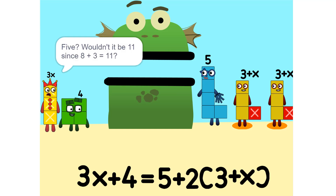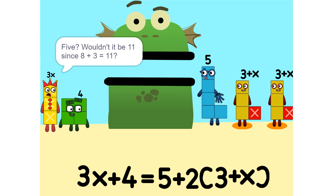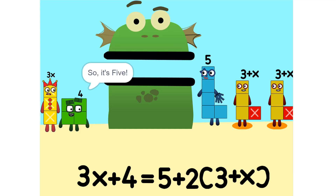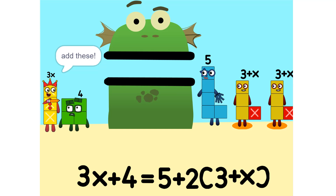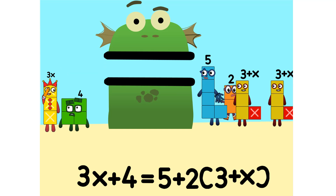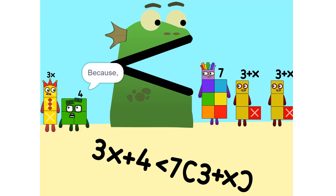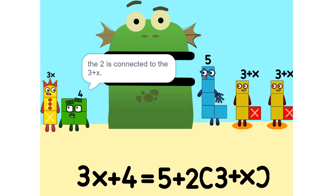Five. Wouldn't it be eleven since eight plus three is eleven? No, because we're adding together eight and minus three, or negative three. So it's five. Five. I see something — we can add these. Why did that happen? Because the two is connected to the three plus X.